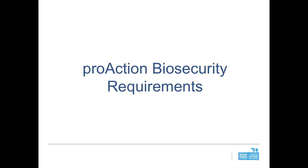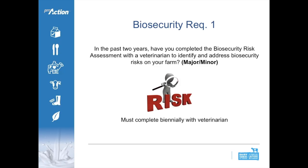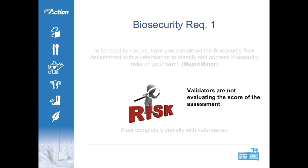Now I'll take everyone through the specific biosecurity requirements of this module. First, every producer needs to have completed a biosecurity risk assessment with their veterinarian to identify and address biosecurity risks on the farm. This is a major/minor requirement and must be completed biannually with a veterinarian. Importantly, validators are not evaluating the score of the risk assessment — they are validating whether it's been conducted, signed and dated, and that there is at least one recommendation to improve on-farm biosecurity.